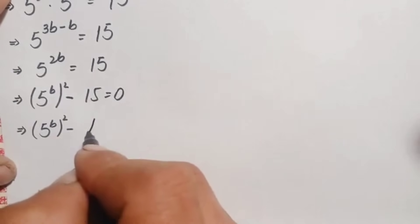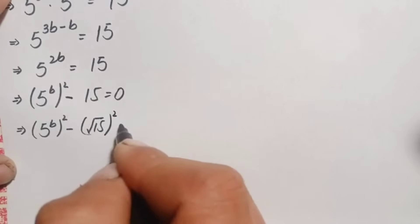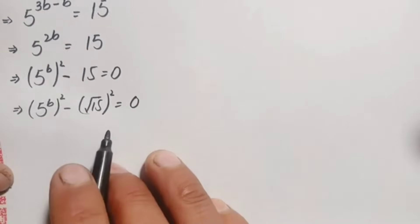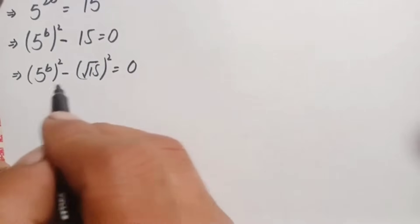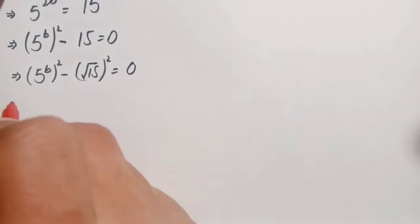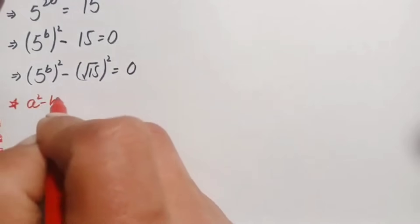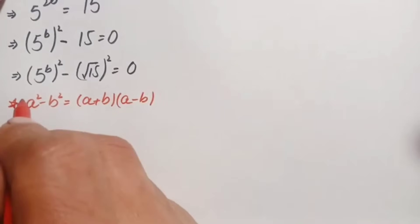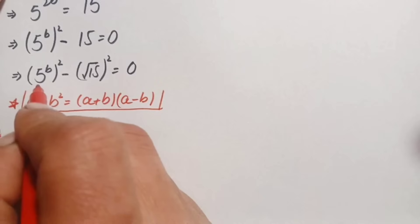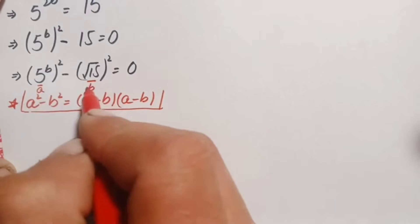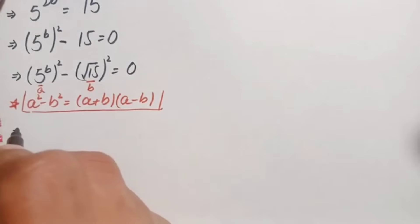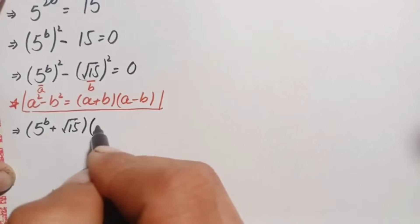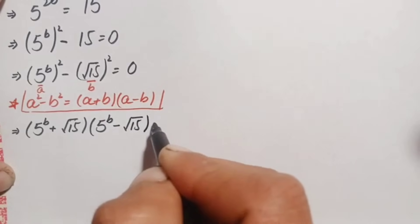We can write 15 in square form as the square root of 15, whole square. So the left hand side becomes 5 raised to power b, whole square, minus square root of 15, whole square, equals zero. This matches the algebraic identity a squared minus b squared, which equals a plus b times a minus b. Here a is 5 raised to power b and b is square root of 15.